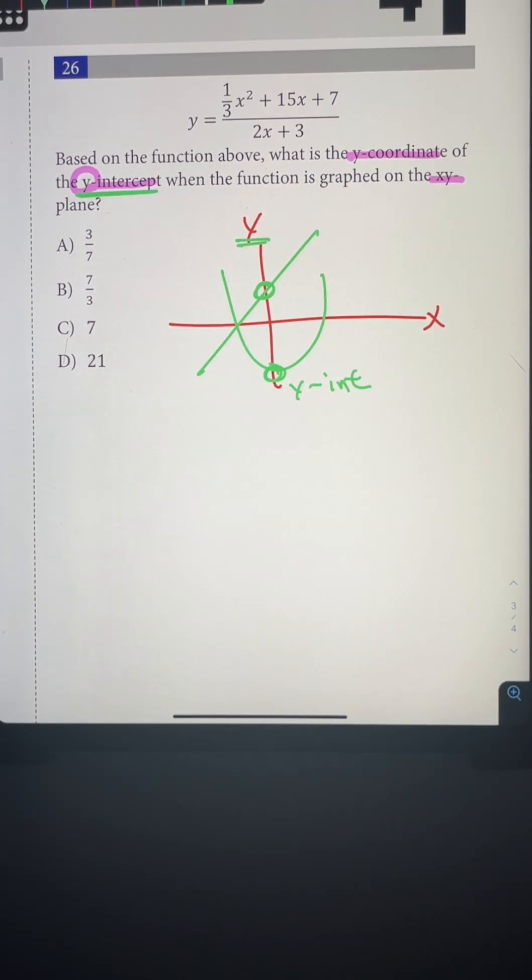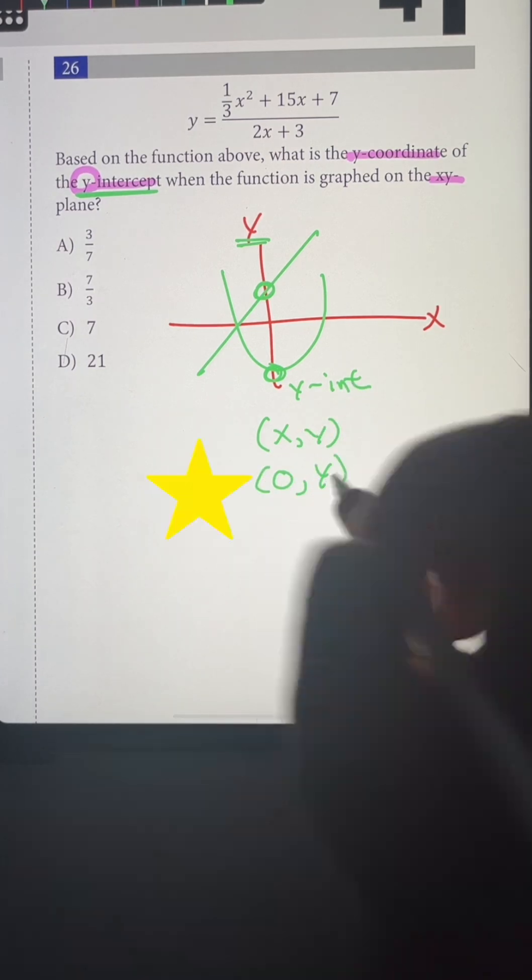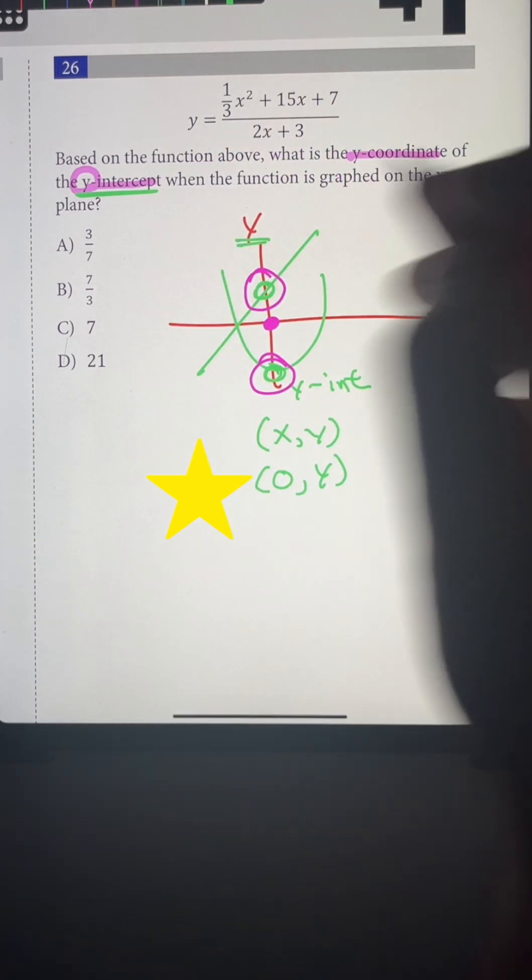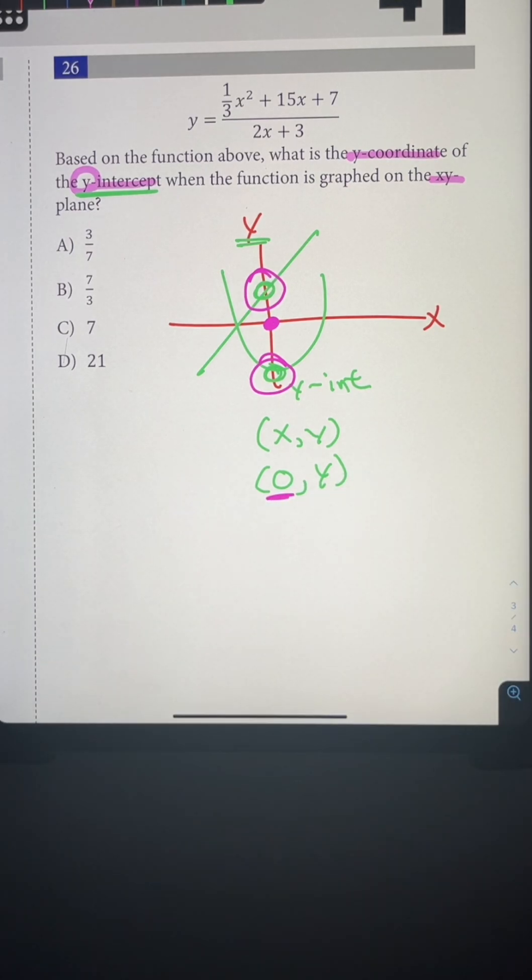For the SAT, you need to know that the y-intercept is going to have an x and y coordinate, and your x-coordinate is always going to be 0. So whatever this graph looks like, it's going to hit the y-axis at a certain point, and we know that at the y-intercept, your x value is going to be 0.